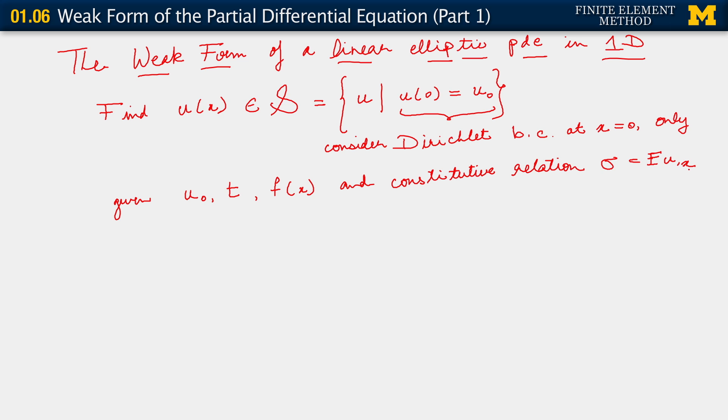σ = Eu,ₓ. So we're given all this data, which was the same as the case for the strong form. However, there is more. Such that for all w belonging to V. Now this is new. This symbol is for all. So now we've done something new. We've introduced a new function w, which was not in the mix at all. We are saying that it is a function belonging to some space V. Think of V as the same sort of concept as S. If you think of S being some kind of polynomials, maybe V is the same sort of class of functions.